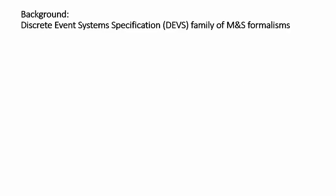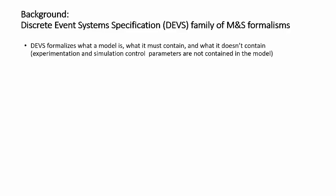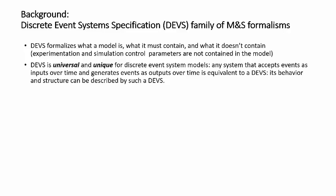On the background, DEVS stands for Discrete Event System Specification, and it can now be considered a family of modeling and simulation formalisms. DEVS formalizes what a model is, what it must contain, and what it doesn't contain. For example, experimentation and simulation control parameters are not contained in the model. DEVS is universal and unique for discrete event system models. Any system that accepts events as inputs over time and generates events as outputs over time can be shown to be equivalent to DEVS, and its behavior and structure can be described by such a DEVS.